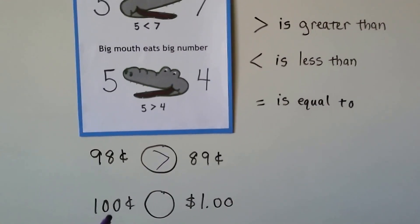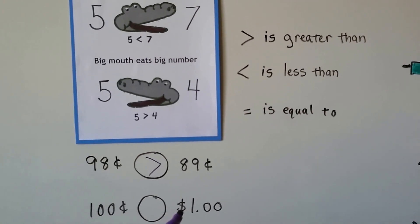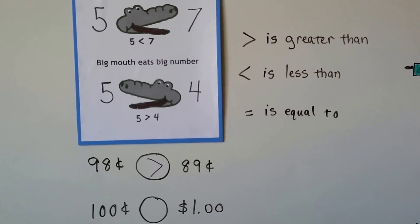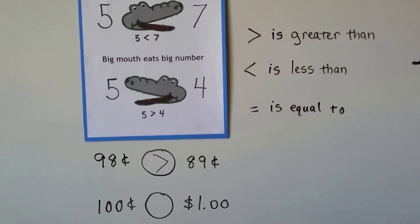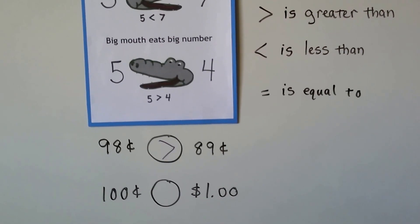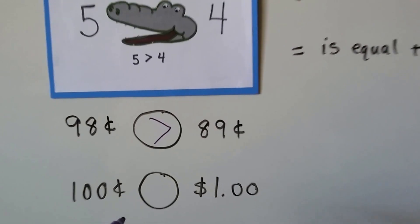How about this one? 100 cents or a dollar. Is it less than, greater than, or equal to? Well, 100 cents is a dollar, isn't it? We can see the 1-0-0. So this is equal.